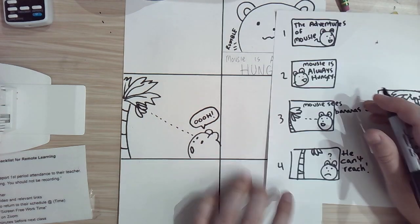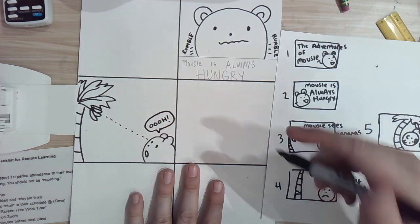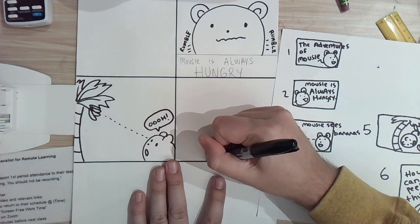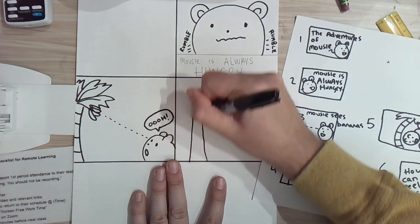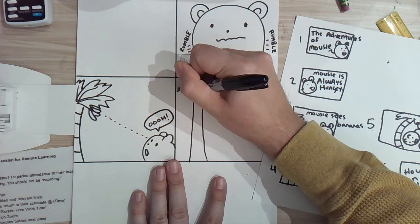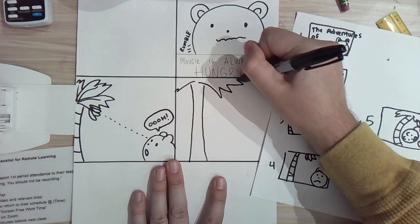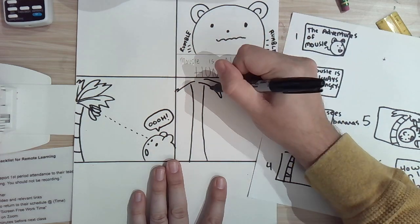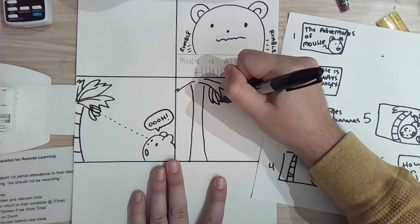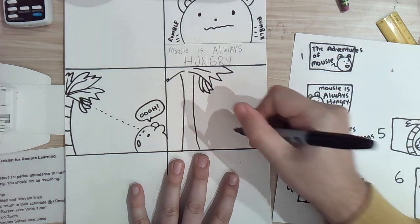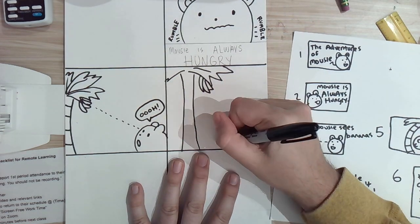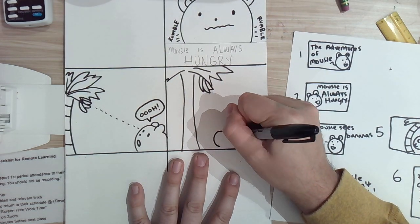My next panel is he can't reach. So, he can be a little bit closer. I'm going to make that tree look a little bit taller. Draw those bananas again.